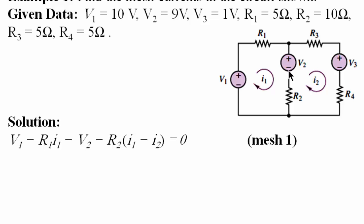Continuing mesh one: minus V2, because the second sign is minus, then minus R2 multiplied by (I1 minus I2), because both I1 and I2 contribute to the current flowing in R2. The full mesh one equation equals zero.